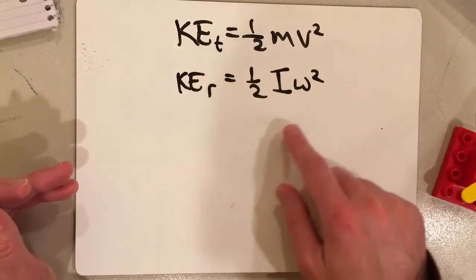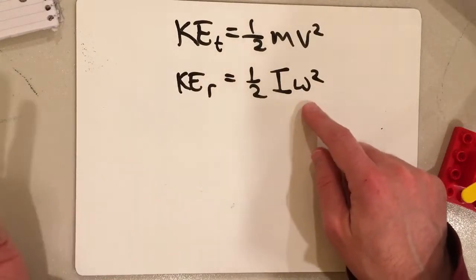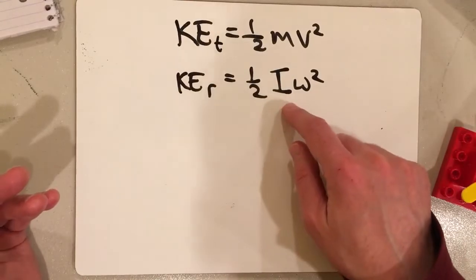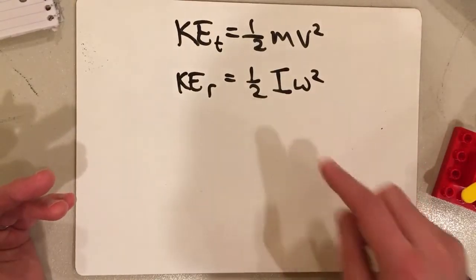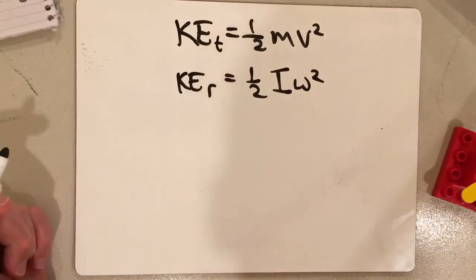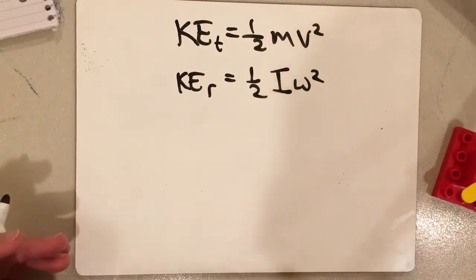And this formula is one-half I omega squared. Omega is the angular velocity. And I is the moment of inertia. Now, I talk about moment of inertia in the angular momentum video, but I'm also going to talk about it here.